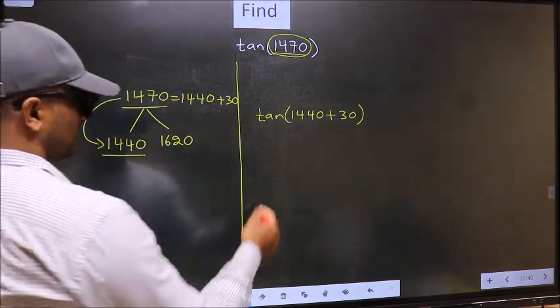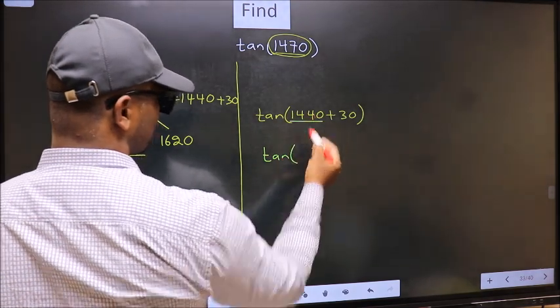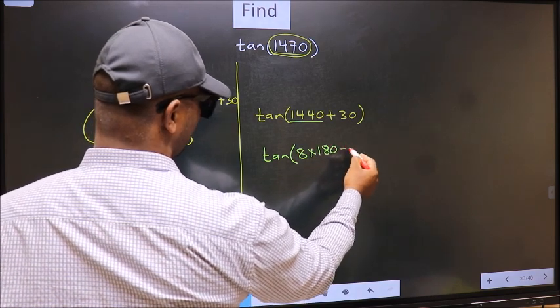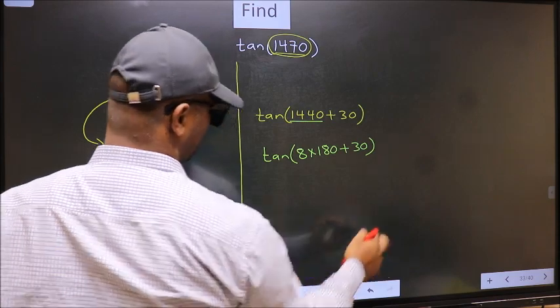Next, tan. In place of this, now we should write 8 into 180 plus 30.